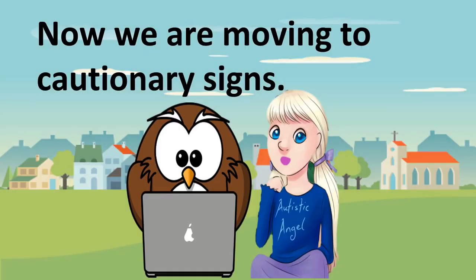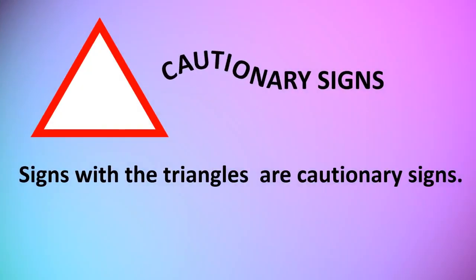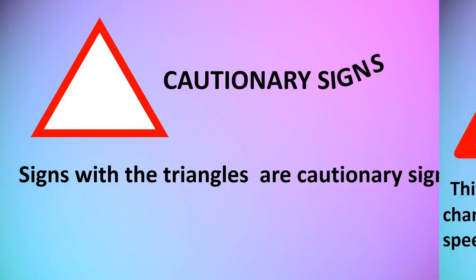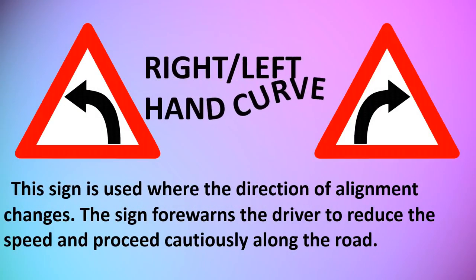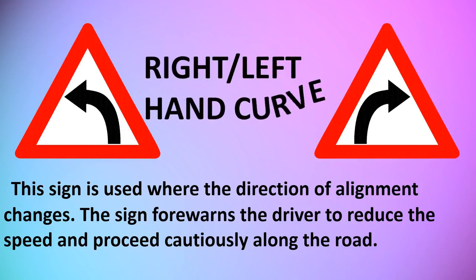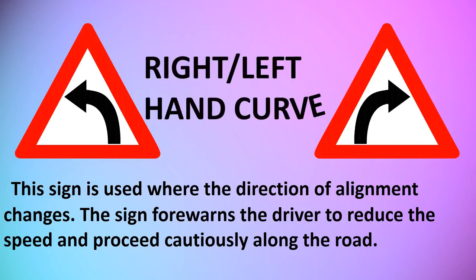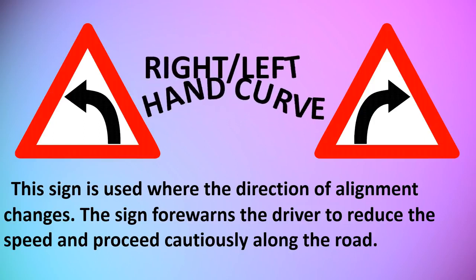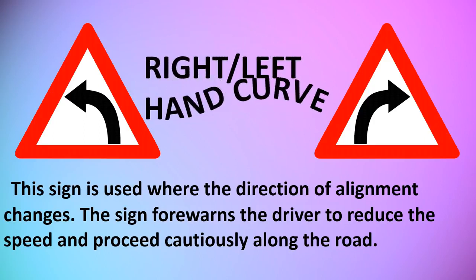Now we are moving to cautionary signs. Signs with the triangles are called cautionary signs. Right or Left Hand Curve: this sign is used where the direction of alignment changes. The sign advises the driver to reduce speed and proceed cautiously along the road.